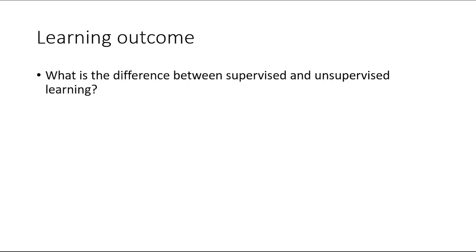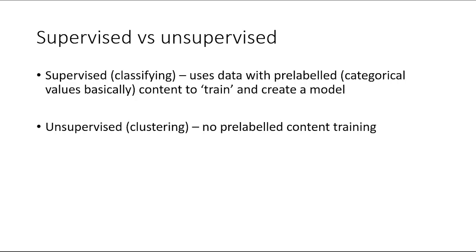One of the first things to talk about is the difference between supervised and unsupervised learning. Supervised learning deals with pre-labeled data and unsupervised learning doesn't. For data mining per se this doesn't make that much of a difference, but for machine learning it does. Classification is generally supervised learning because you have a label in the data — like whether credit scores are good or bad — and you use that to train on new data. With unsupervised learning you're starting from scratch with no label, so you don't know whether credit scores are good or bad because that label isn't in the data.